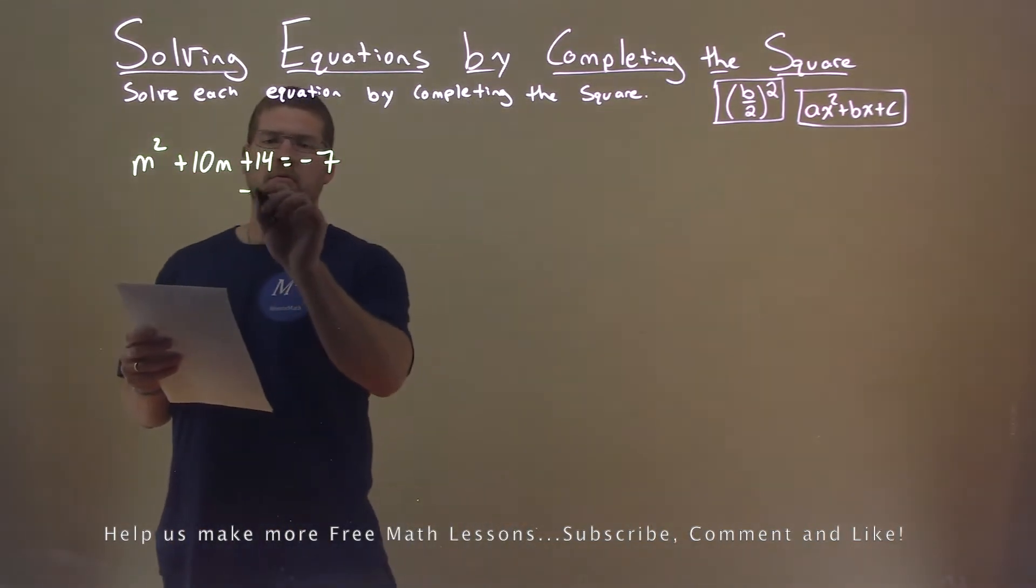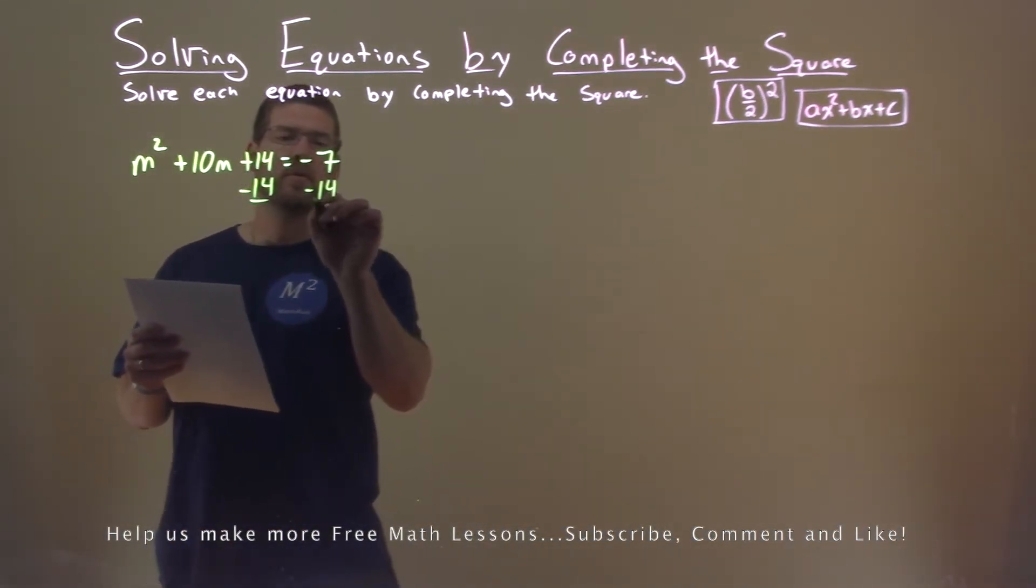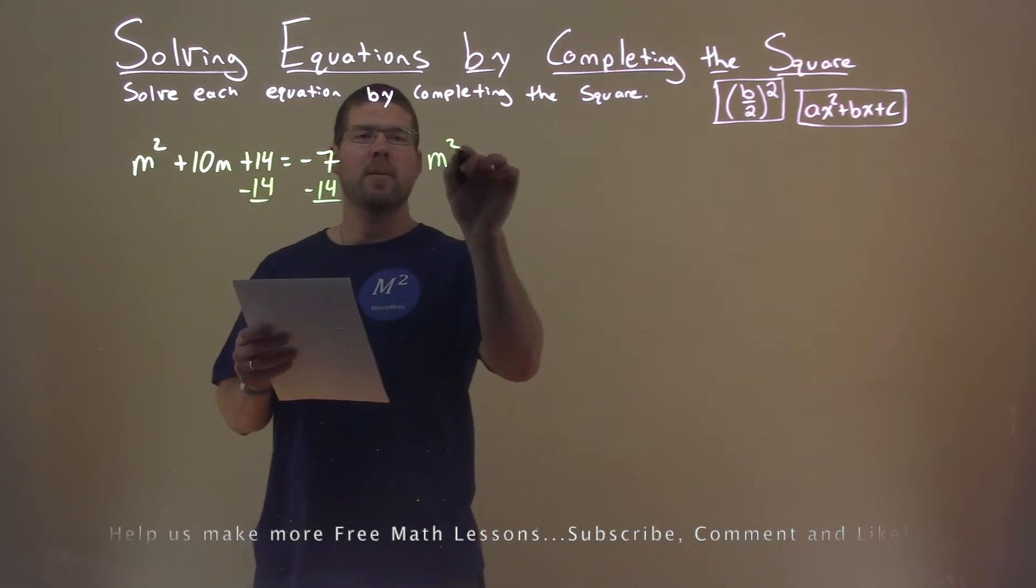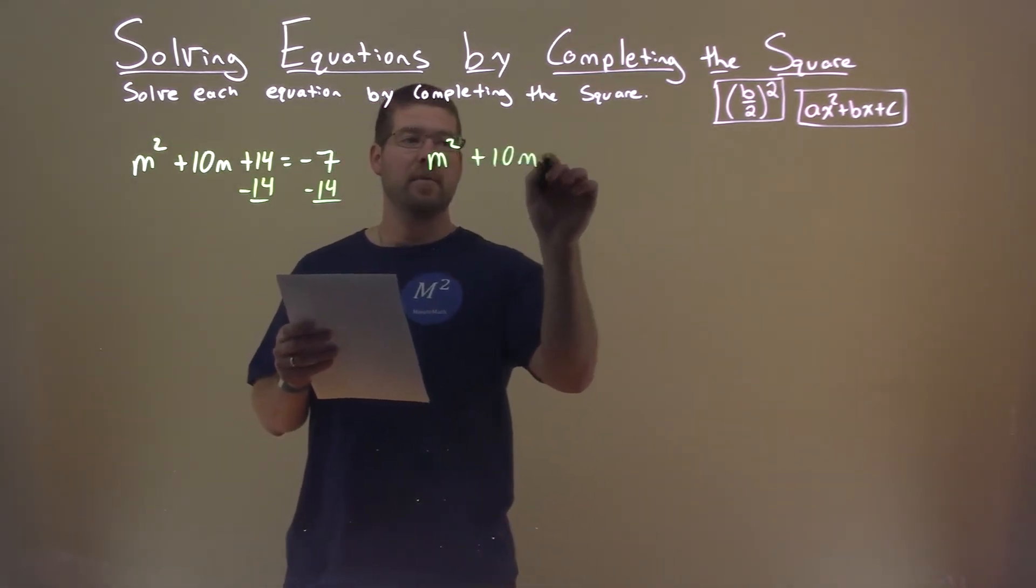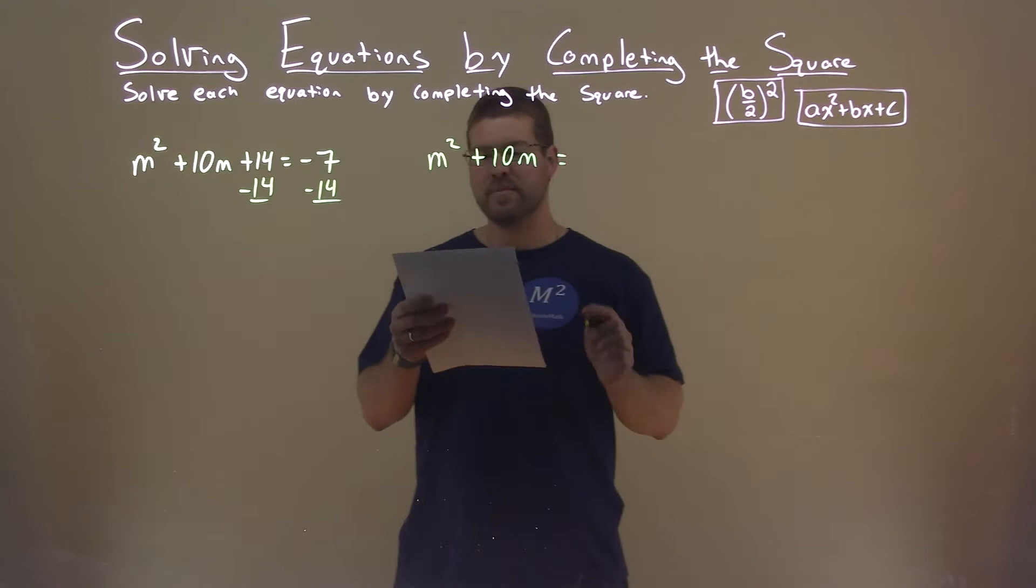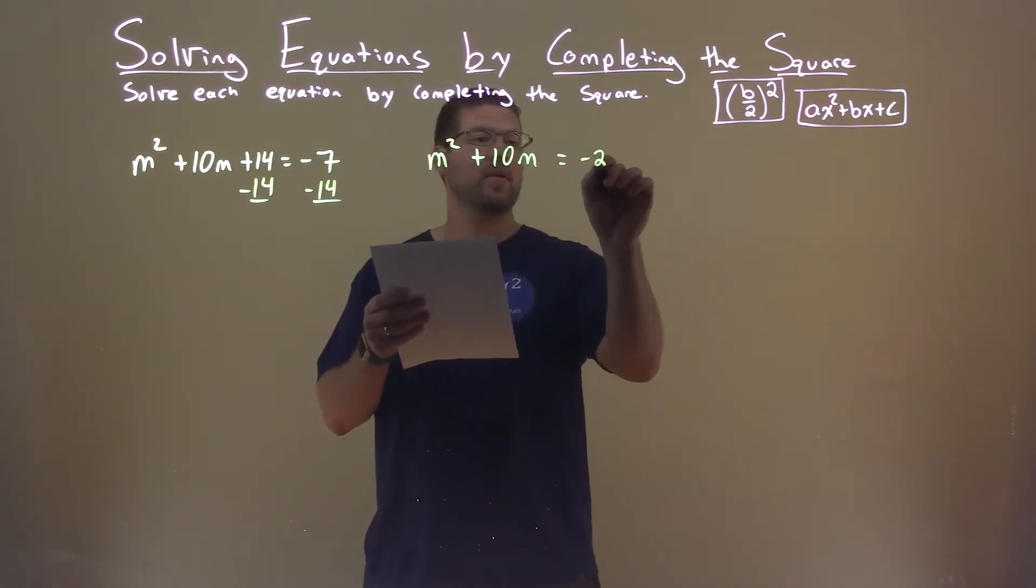First thing I'm going to do is subtract 14 from both sides. We're left with m squared plus 10m equals negative 7 minus 14, which is negative 21.